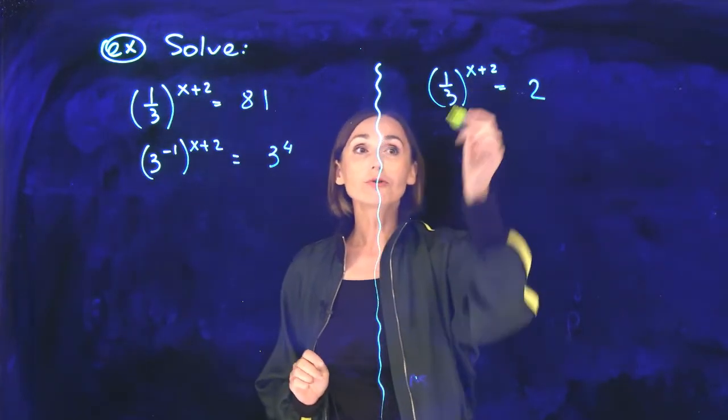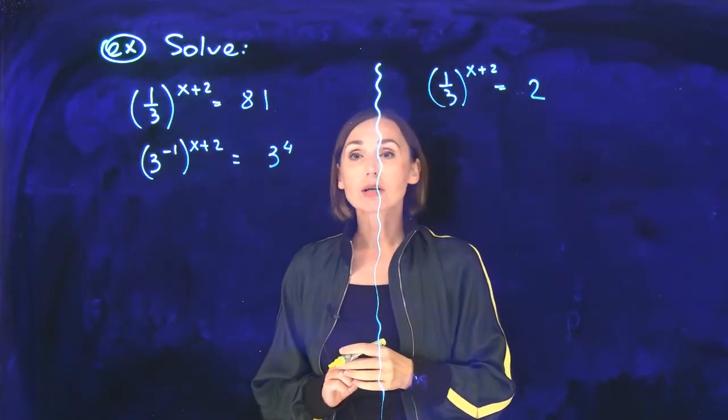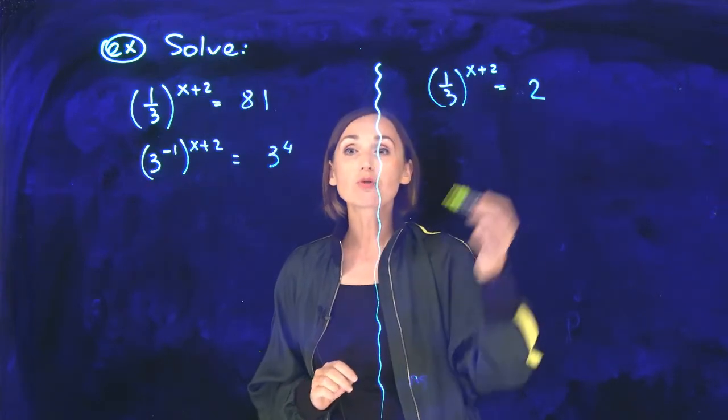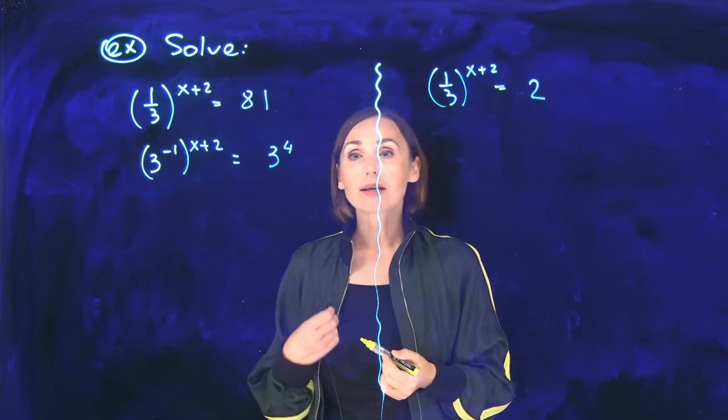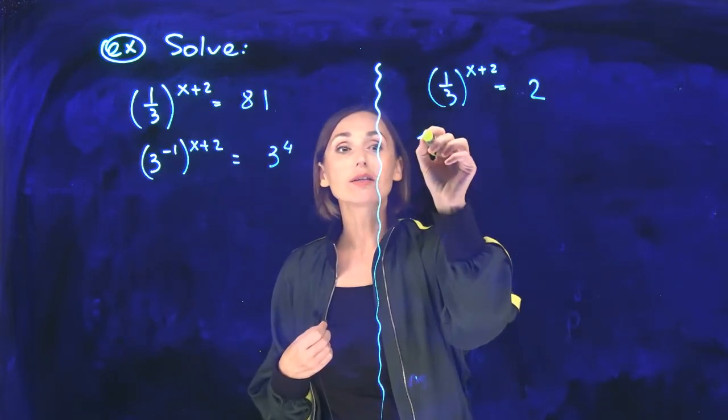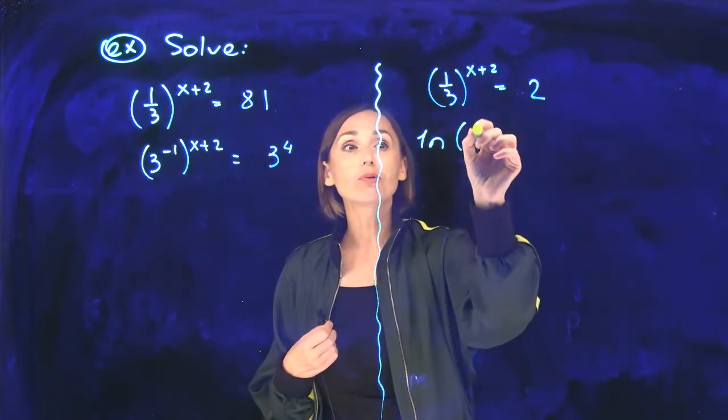Here, one-third to the power x plus 2 equals number 2. There is no common base between one-third and 2, so the only way that I can solve it is take natural log of both sides.